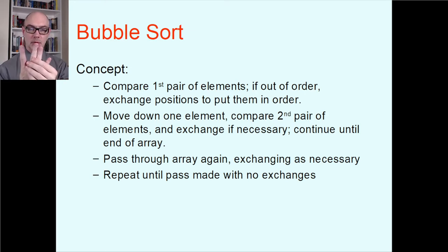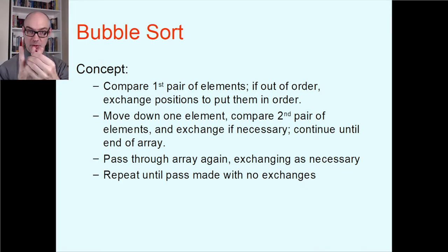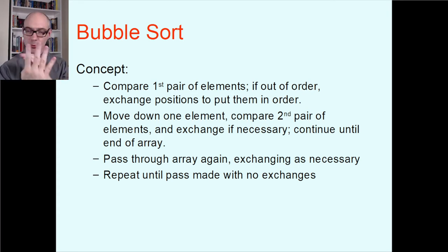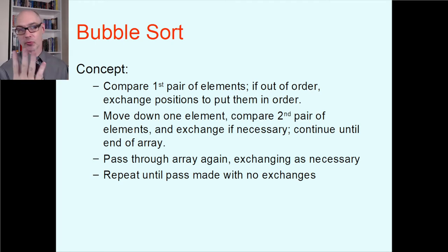Now take one step down the array and do the same thing with the next pair. Compare them — is this lesser than that? If so, good. If not, swap them. Then do the same thing for the next pair, and so on. That one pass through the array will probably not have the whole array sorted — it'll be more ordered, a little bit better, but probably not totally sorted.